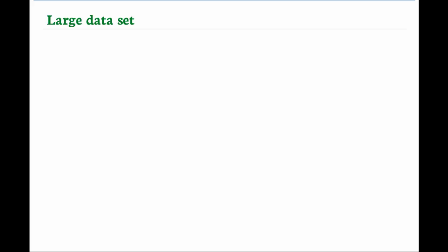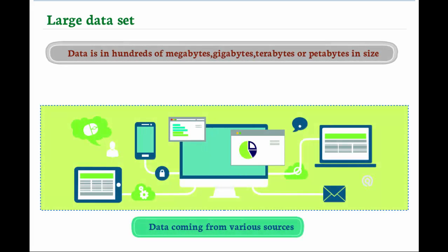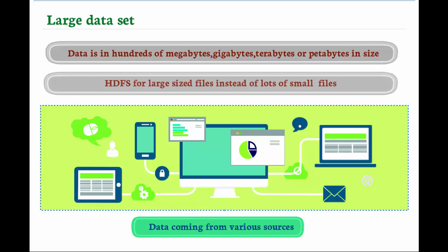Large data set: In the context of HDFS, large data means data that are in hundreds of megabytes, gigabytes, terabytes, or even petabytes in size. It is preferable to use HDFS for large-sized files instead of lots of small files, because metadata of large numbers of small files consumes a lot of memory space than the small number of entries for large files in the Name Node, and hence reduces the performance of the cluster.